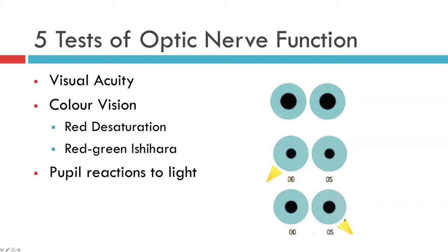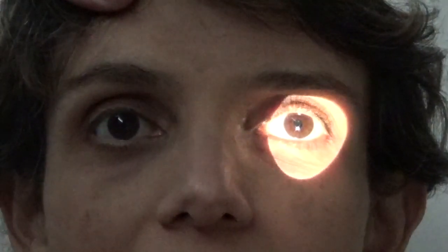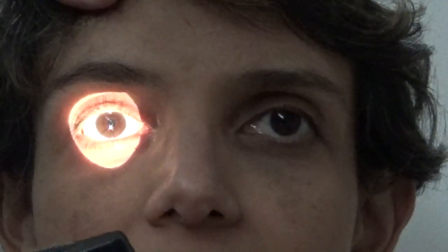Let's see that in action now. You'll need a very dark room and a very bright light brought from directly in front of the patient. You firstly examine the direct response for three seconds on the right eye and then take the light away. Next, examine the direct response of the left pupil for three seconds and then take the light away.